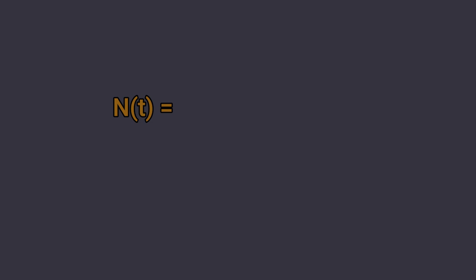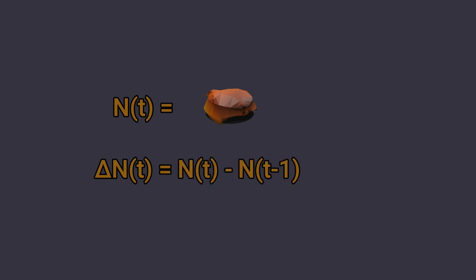Now I will introduce you to some evolution mechanics. I call N the population of Wilpoo at a given time, and I denote with delta N the increment of the same population at the same time.